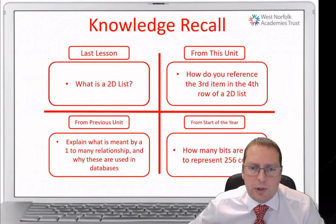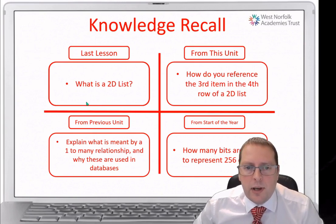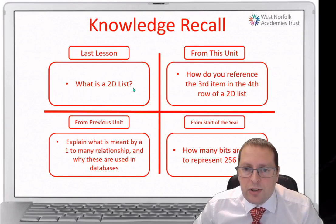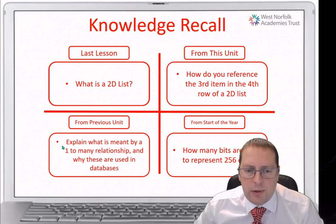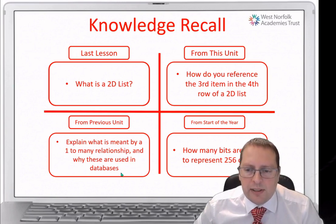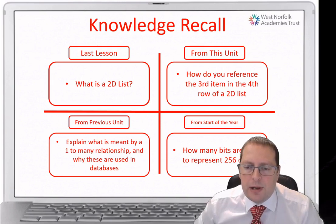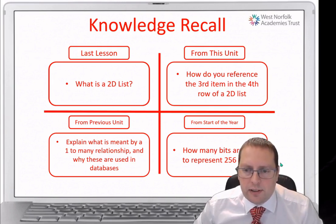Before we move on with searching, just a recall of our knowledge. From Python you need to explain what a 2D list is, or a two-dimensional list, and how you reference the third item in the fourth row of a two-dimensional list. Then on databases, explain what is meant by a one-to-many relationship and why these are used. From your bitmap unit, look at how many bits are needed to represent 256 colours. Pause the video and answer those questions.